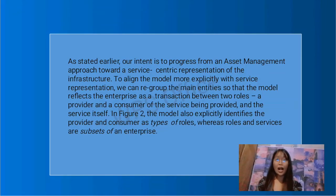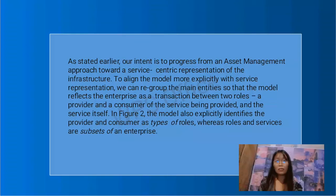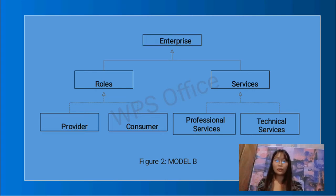As stated earlier, our intent is to progress from the asset management approach toward a service-centric representation of the infrastructure, to align the model more explicitly with service representation. We can regroup the main entities so that the model reflects the enterprise as a transaction between two roles: a provider and customer of the service being provided, and the service itself. In Figure 2, the model identifies the provider and customers as types of roles, where roles and services are subsets of an enterprise. So enterprise contains: roles (provider and customer) and services (professional service and technical service) — this is Figure 2, Model B.